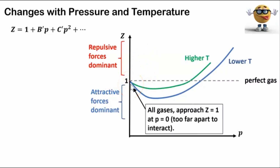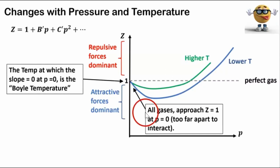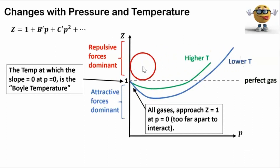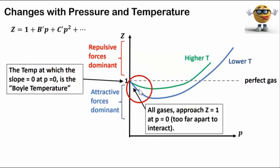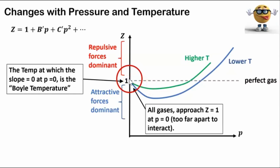Both curves go to one at zero pressure — all real gases approach a compression factor of one as pressure goes to zero, because at zero pressure the particles are too far apart to interact via repulsive or attractive forces. The slope of these curves at zero pressure is not zero; it changes with temperature. The temperature at which the curve has zero slope at zero pressure is called the Boyle temperature, and at that temperature the gas acts ideally over a larger range of pressures. This is why gases behave more ideally under low pressures and high temperatures — at low pressures we approach Z equal to one, and at the Boyle temperature we have a flatter slope over a longer range.